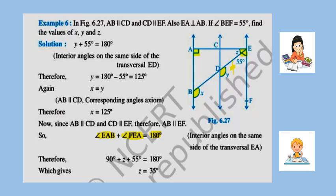Since CD is parallel to EF, angles Y and 55 degrees are interior angles on the same side of transversal BE, so Y plus 55 equals 180, giving Y equals 125. Since AB is parallel to CD, X and Y are corresponding angles and corresponding angles are equal, so X also equals 125.